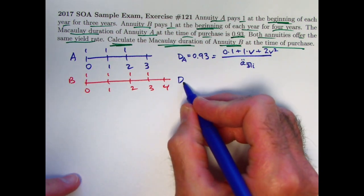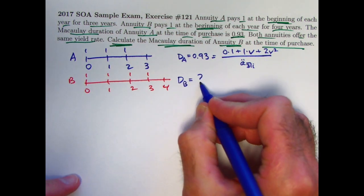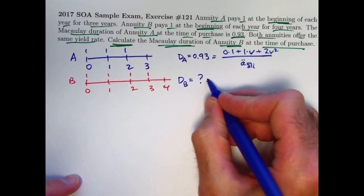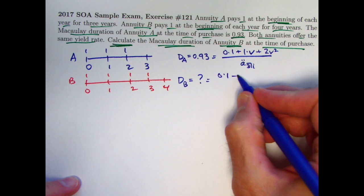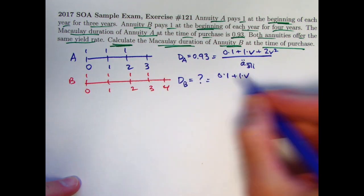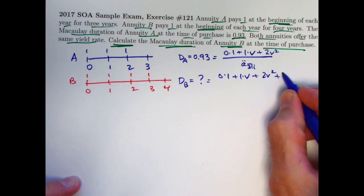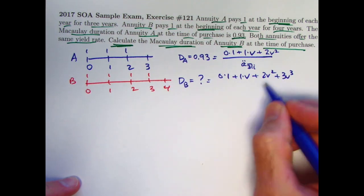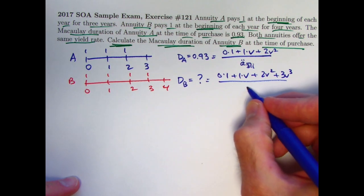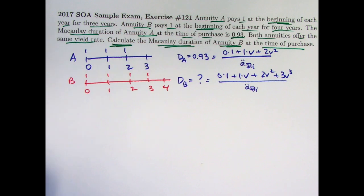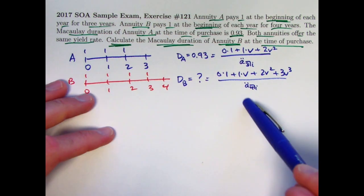And we want to find the duration of annuity B. So that's a question mark. But we can write it symbolically as zero times one plus one times v for this payment, plus two times v squared for this payment, plus three times v cubed for this payment, all divided by the price of annuity B, its present value, which would be A double dot sub four i. So there's your basic setup. And so the goal is to find this thing.